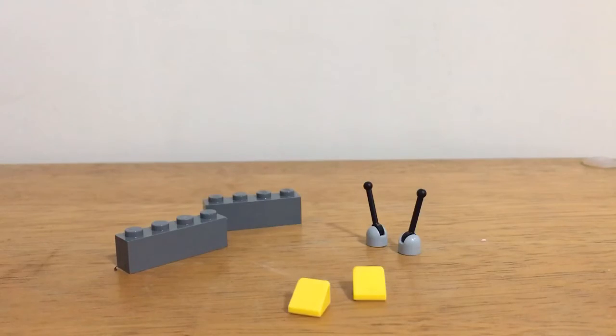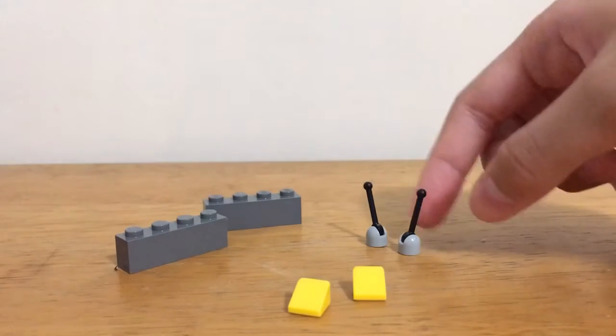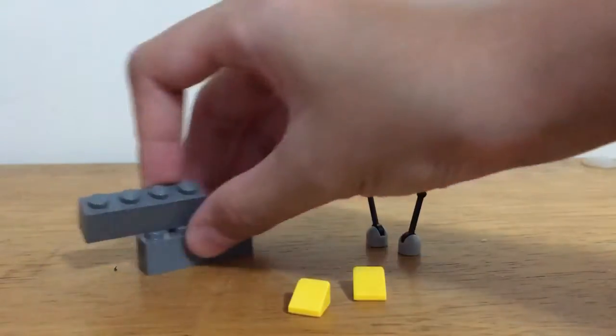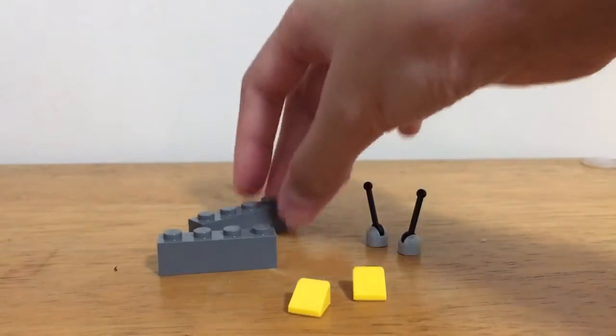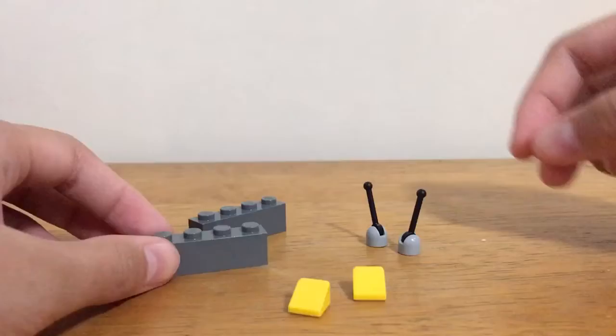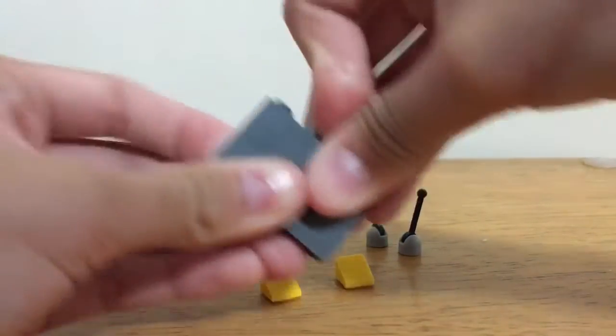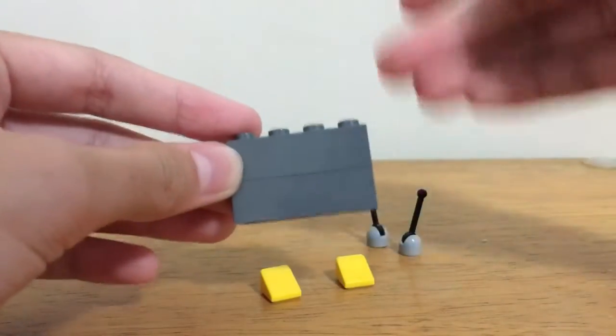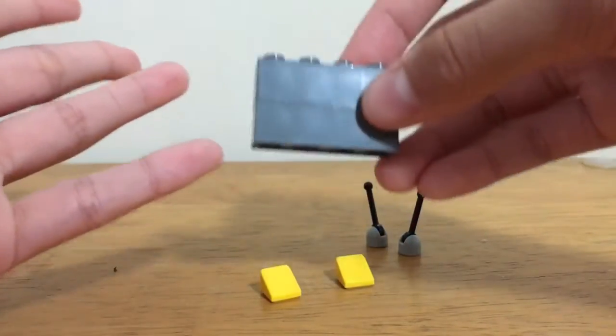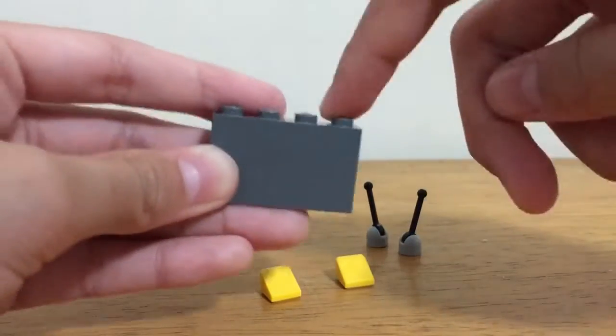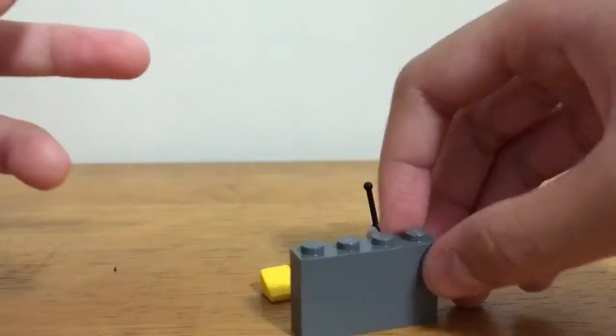First, I'm going to be doing the TV itself. For this, we will need two antennas, two slopes, the small ones, and two 1x4 blocks. So first, we'll get the two 1x4 blocks, then stack them up like this. You can also use black pieces so that it looks more like a television, but I don't really have it right now, so I'm substituting it with gray blocks.